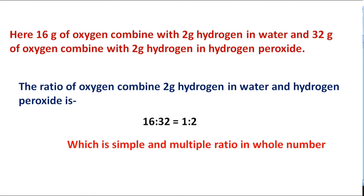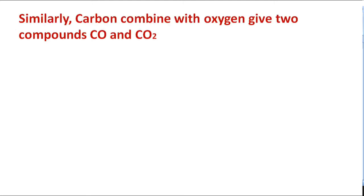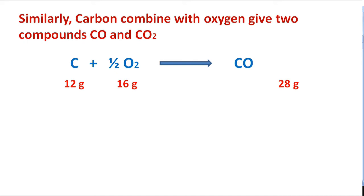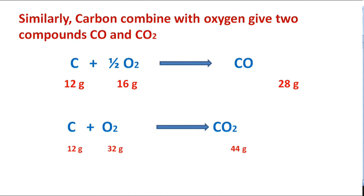Similarly, to explain the Law of Multiple Proportions, we take another example: carbon combined with oxygen gives two compounds, carbon monoxide and carbon dioxide. Here, 12 grams of carbon combined with 16 grams of oxygen gives 28 grams of carbon monoxide. And 12 grams of carbon combined with 32 grams of oxygen gives 44 grams of carbon dioxide.